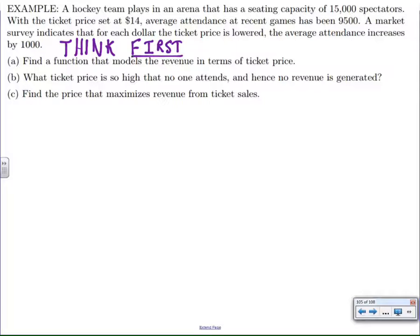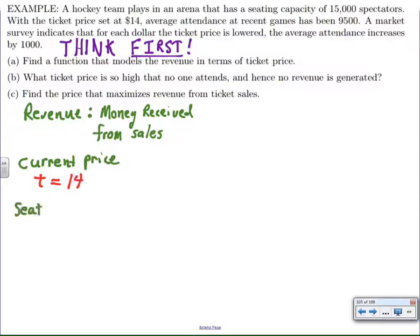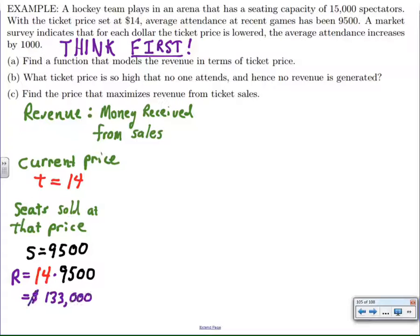First, we have to know what our variables are. One of the variables is revenue, and that's what we're trying to maximize. Revenue is the money that we receive from sales. If I let the ticket price be $14, that's the independent variable because ticket price is going to affect revenue. If we charge $14, we get 9,500 seats. And if we multiply 9,500 people times $14 per seat, it gives me a grand total of $133,000.